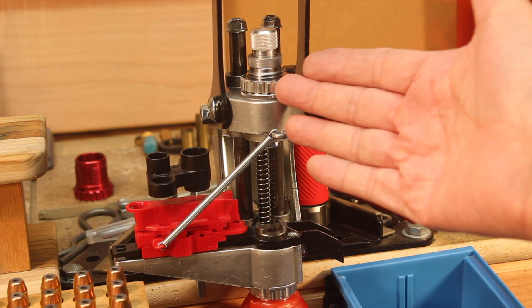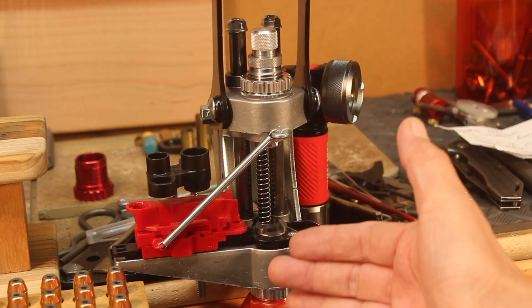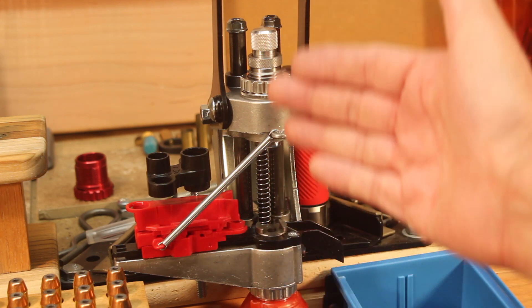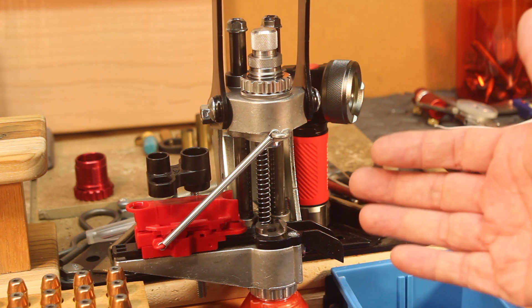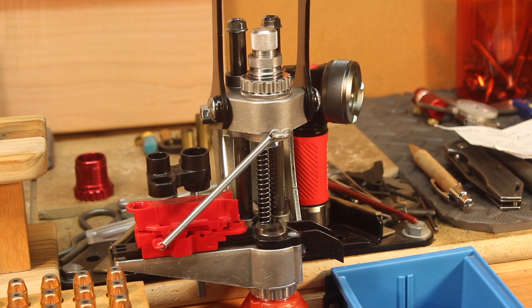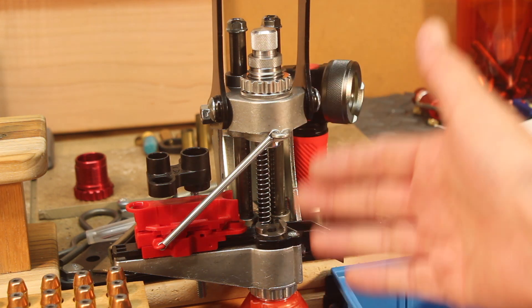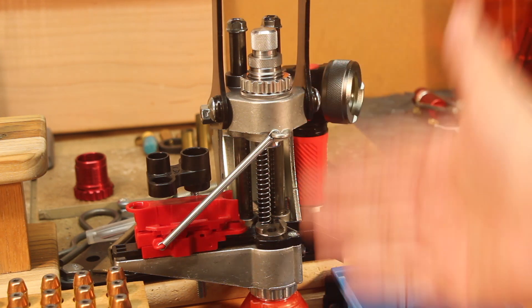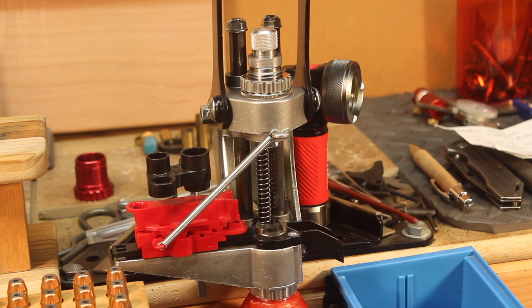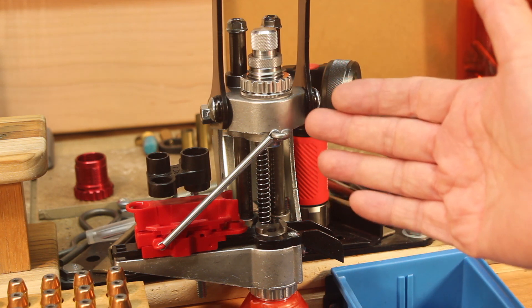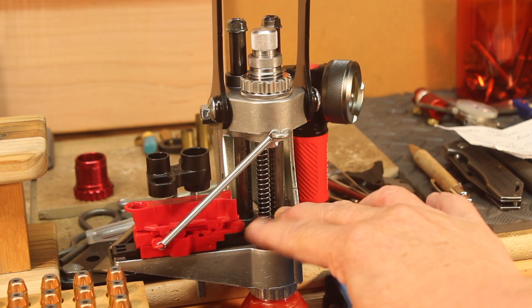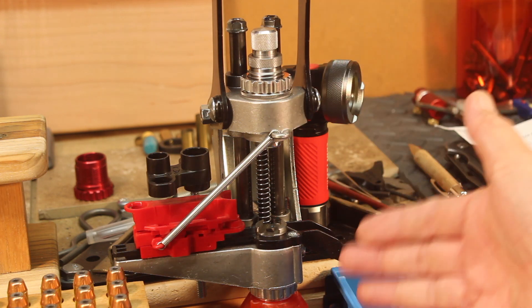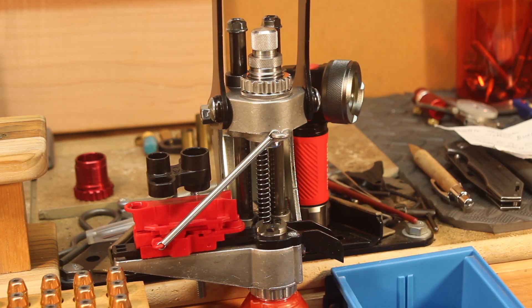The RCBS Summit Press was different in that it used a die that was pushed down onto a stationary case instead of the case going into the die. When the ram is pushing a case into the die, you need to have a frame to support that, and a heavy frame is required if you've got a heavy ram. With the Summit Press, they still used a very heavy ram because they wanted to get the concentricity and the alignment. What the Lee engineers did was by using a floating shell holder in the X and Y axis and a floating die, you can get that alignment without having to have a real heavy ram in the back.